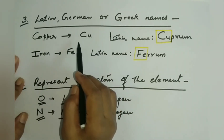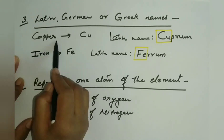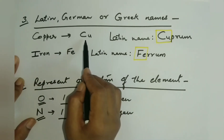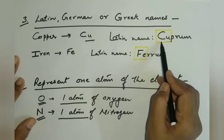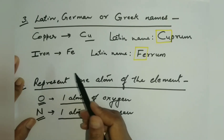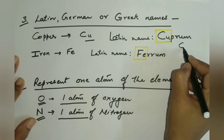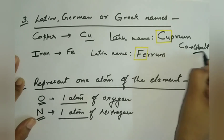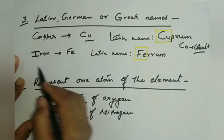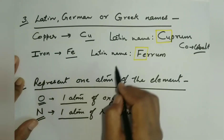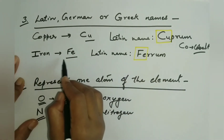In some cases, the two letters of the symbols were chosen from the Latin, German, or Greek names of elements. For example, copper — copper is an English name and its symbol is Cu. This symbol was chosen from its Latin name cuprum. The first two letters of cuprum, C and U, were taken as its symbol. If they had taken the symbol from the English name copper, CO would have meant cobalt. That's why in some cases scientists used Latin names for the symbols. Similarly, for iron, its symbol is Fe, taken from its Latin name ferrum. The first two letters of ferrum are F and E, so the symbol of iron is Fe.